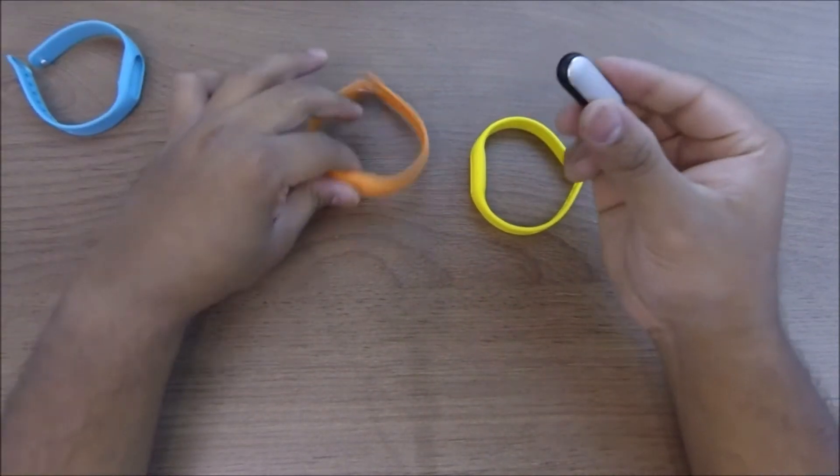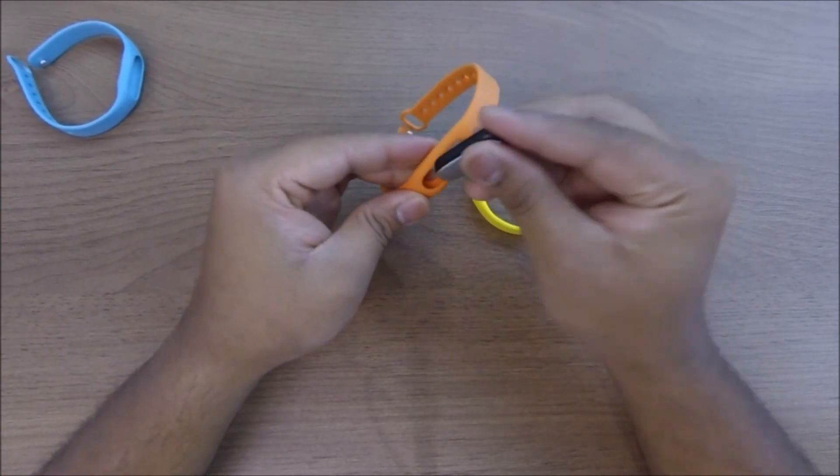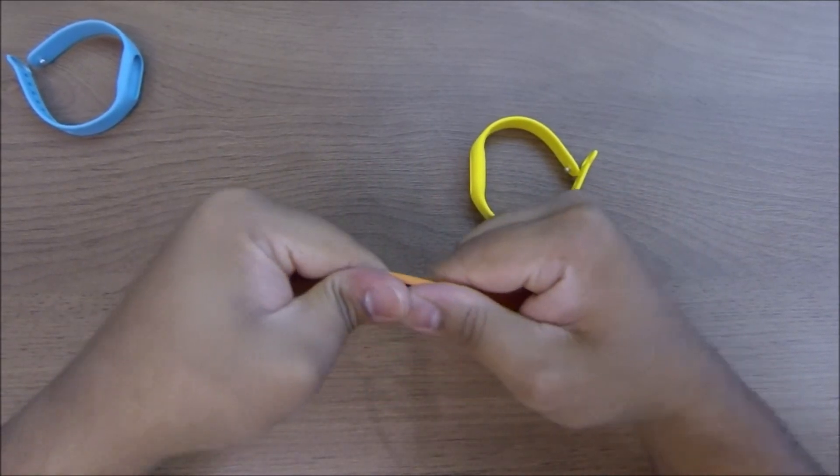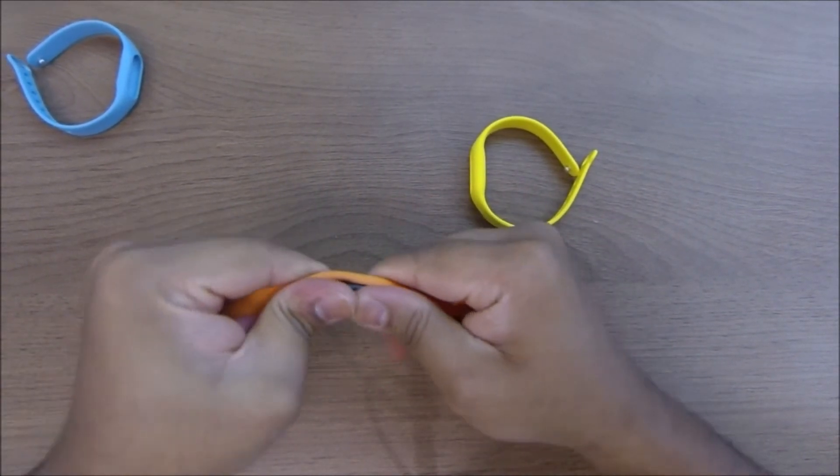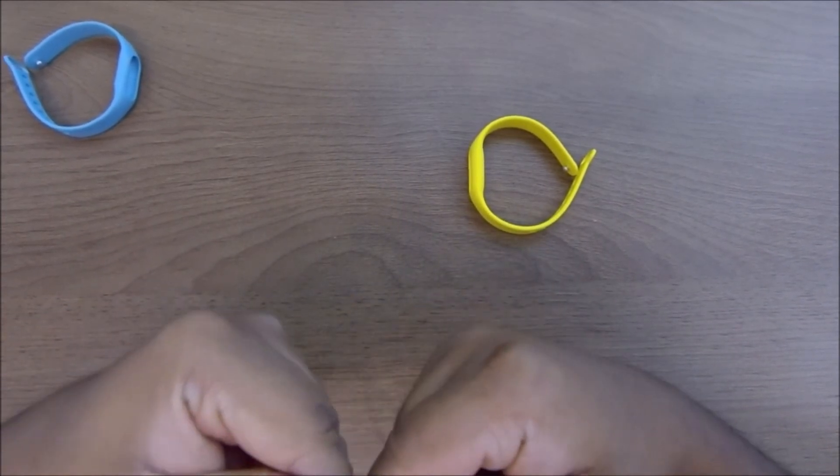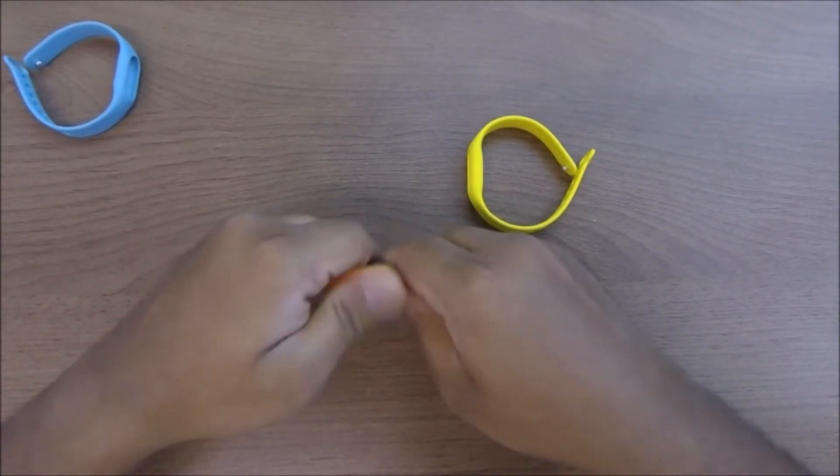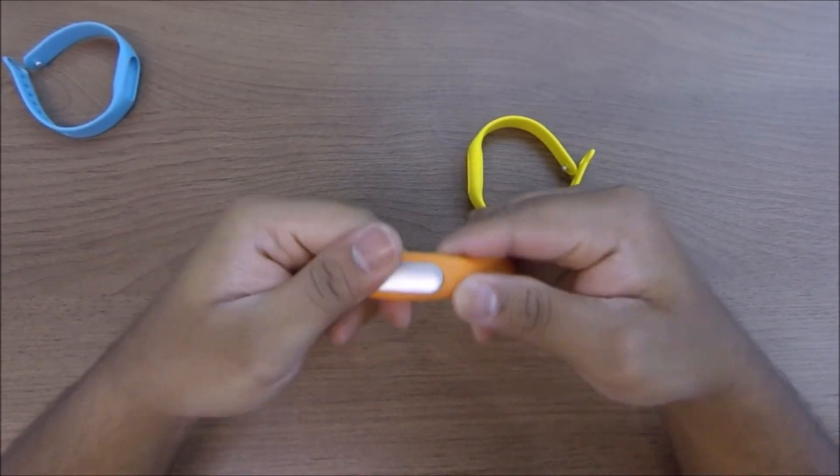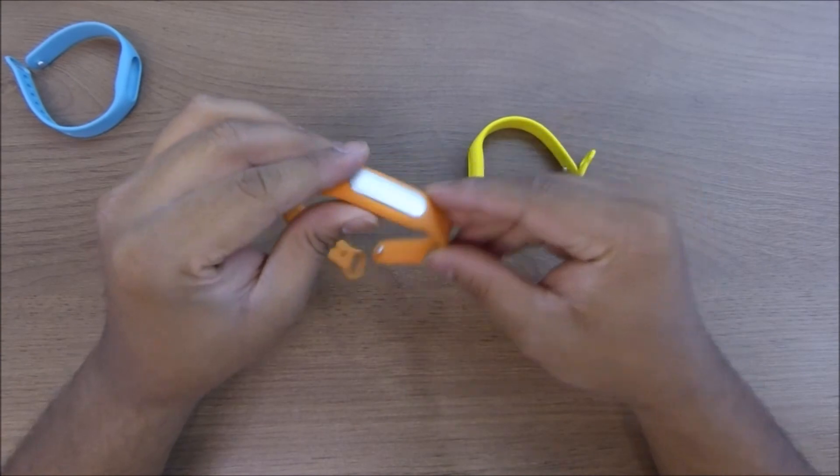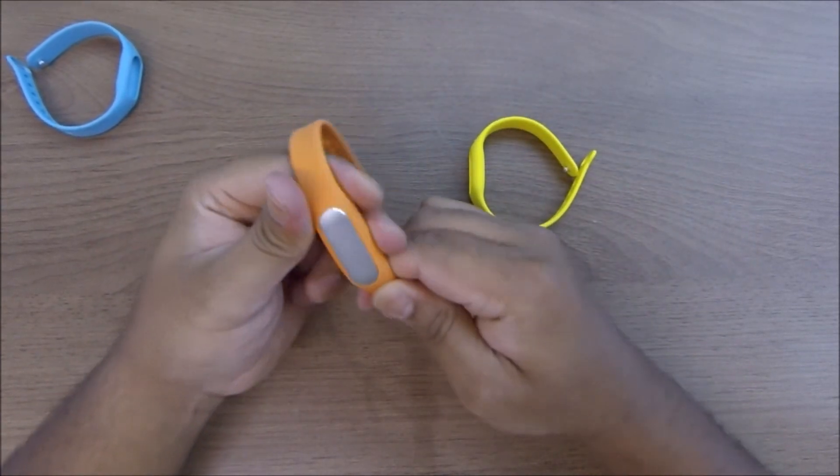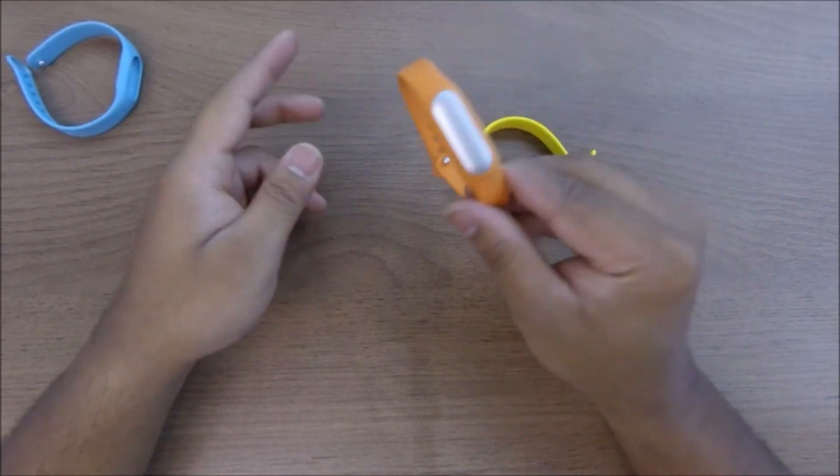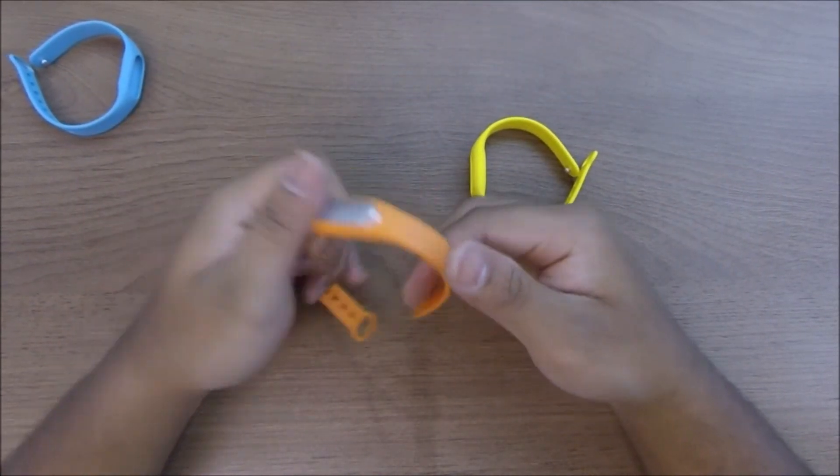It also fits the other two bands, just for your reference. This is pretty tight to put it back, although the Mi Band strap itself was not. This is pretty tight, you have to pull it a lot, but it fits exactly the same way and looks a lot different.